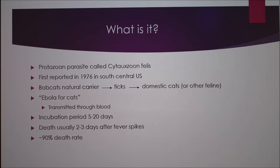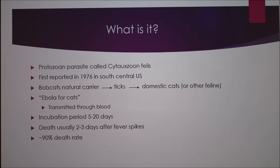It starts in the bobcat — they get infected, kind of get over it, and then just become carriers. Then ticks bite them, and it goes through the ticks to domestic cats, and from there it pretty much just kills cats.